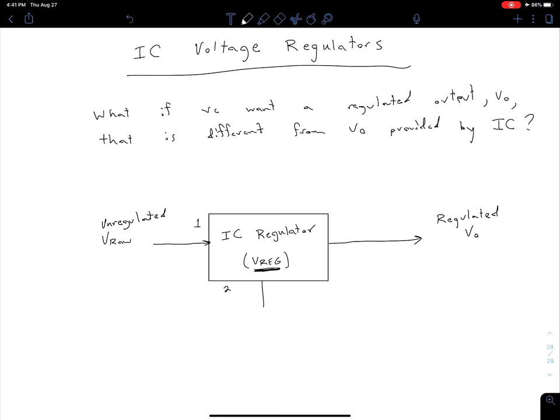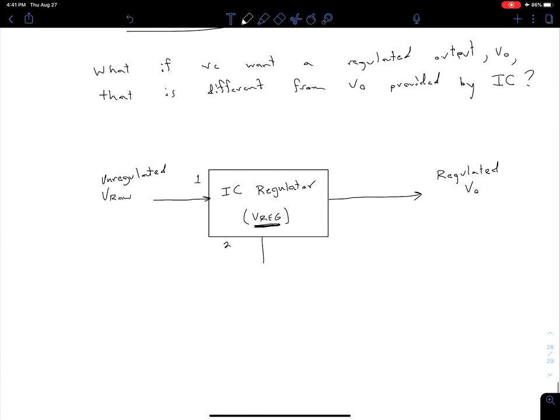Say we have an IC meant to regulate 12 volts but we want 7 volts. We can do that by connecting a voltage divider network. We connect resistor R1 and resistor R2 between output and ground, connecting terminal 2 between the two. To keep terminal 2 at AC ground, we connect a capacitor in series with the lower resistor.